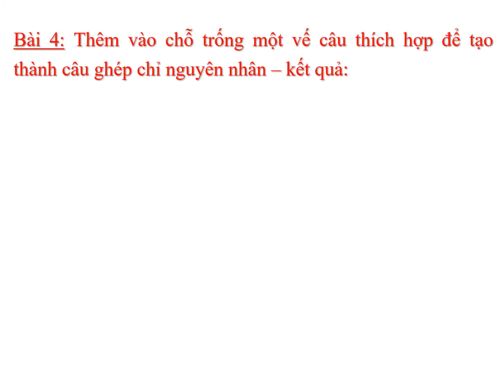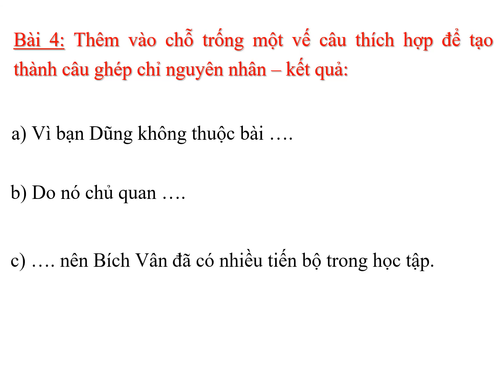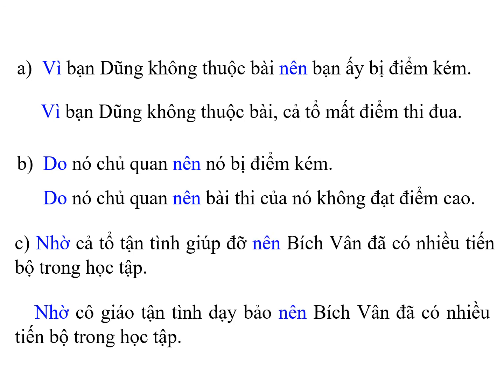Bây giờ cô cho mình chuyển sang bài tập cuối cùng. Bài tập số 4: Thêm vào chỗ trống một vế câu thích hợp để tạo thành câu ghép chỉ nguyên nhân kết quả. Câu A: Vì bạn Dũng không thuộc bài... Câu B: Do nó chủ quan... Câu C: ...Nên Bích Phấn đã có nhiều tiến bộ trong học tập. Bây giờ em hãy suy nghĩ và hoàn chỉnh câu ghép chỉ quan hệ nguyên nhân kết quả. Đây là đáp án của cô: Câu A, Câu B, Câu C. Xin chúc mừng các em đã có những câu trả lời đúng.